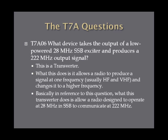What device takes the output of a low-powered 28 MHz single sideband exciter and produces a 222 MHz output signal? The device is called a transverter. Transverters add functionality to your radio by allowing it to produce a signal at one frequency and then changing it to another — usually a higher frequency. This transverter allows a radio designed to operate at 28 MHz single sideband to produce a 222 MHz signal.